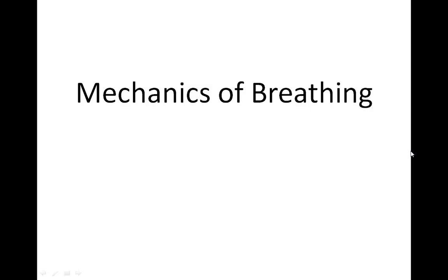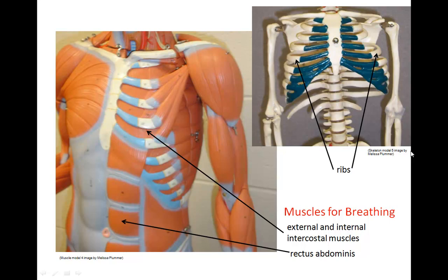We now need to discuss the mechanics of breathing — how oxygen makes its way into the lungs, inhalation, and how carbon dioxide makes its way out of the lungs, expiration. Your lungs are protected by the rib bones, which together make up part of the thoracic cage. The contraction of the external intercostal muscles causes the ribs to be lifted up and out. Your ribs can also be drawn down and inward, controlled by the internal intercostal muscles.